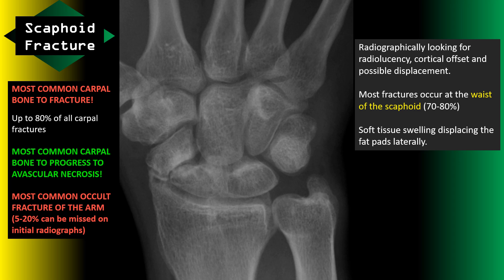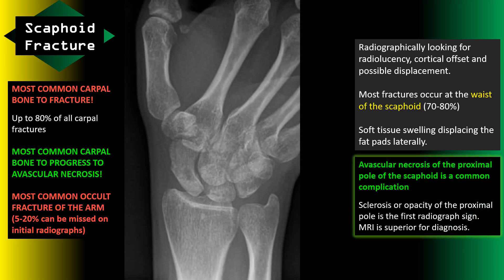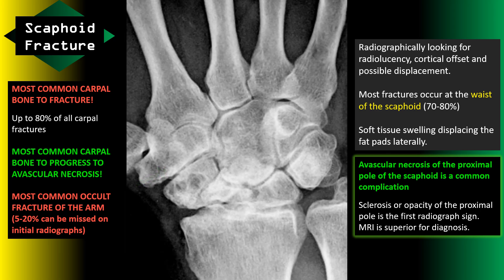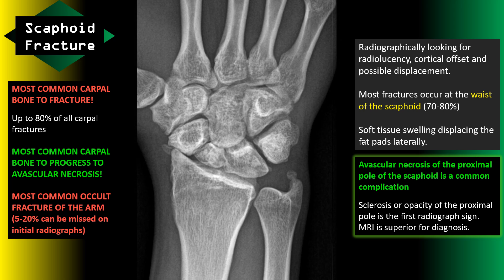Scaphoid fractures are the most common radiographically occult fracture of the arm, and up to 5 to 20 percent can be missed on initial radiographs. The scaphoid is the most common carpal bone to progress to avascular necrosis — specifically of the proximal pole. On x-ray, look for sclerosis or opacity of that bone; MRI is the gold standard for evaluating avascular necrosis. Here is a good example of a non-union scaphoid fracture with secondary degenerative changes.